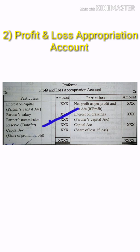The credit side of the Profit Appropriation Account includes Net Profit, Interest on Drawings, and Share of Loss. This account is prepared to distribute the net profit and loss among the partners.